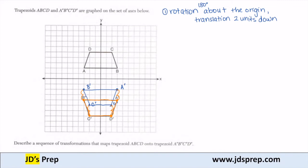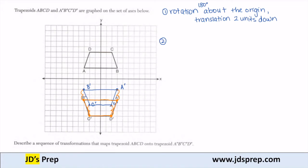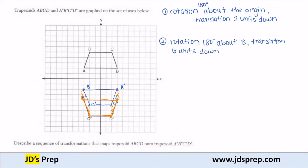So that's one of the ways — a sequence of transformations that can map the trapezoid onto the other one. A couple other things that you can do: you can do a rotation, again 180 degrees, but this time about the point B. After you do that, you can do a translation six units down and then six units left.